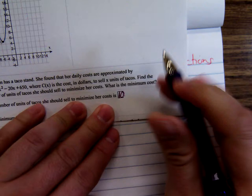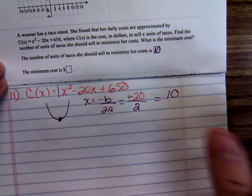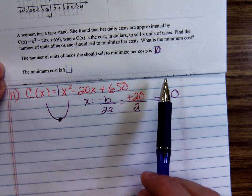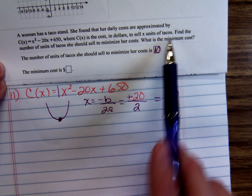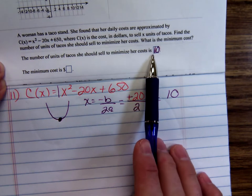She should sell 10 units of tacos. We don't know what a unit is, but she should sell 10 units of tacos to minimize her costs.